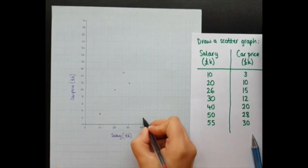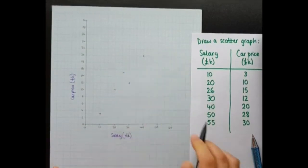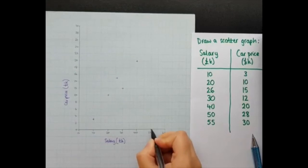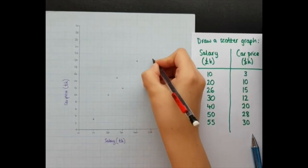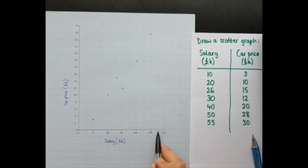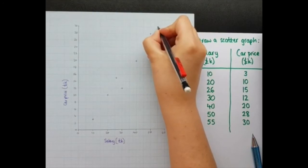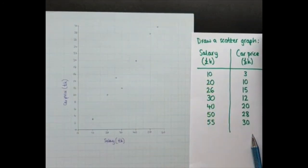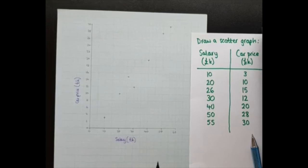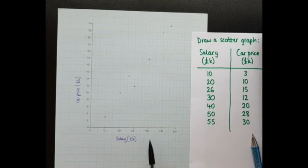At 40k salary, the car costs 20. At 50k salary, the car costs 28. And at 55k salary, the car costs 30 grand. So you can see I've got my points plotted. Now they're not in an exact straight line and that's absolutely fine. That's what we would expect from a scatter graph. It's called a scatter graph because the points are scattered around a little bit.